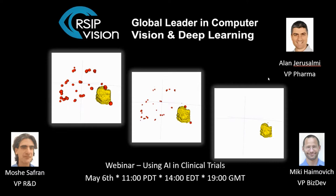So we're here to discuss using AI in clinical trials. I'll tell you a few words about RSIP Vision. Then we will discuss a specific context and a specific example using AI in clinical trials. Then we will delve into the benefits of AI in general in clinical trials. And then we will end with our Q&A session. I encourage you during the presentation to send your questions, and we'll be happy to answer each and every one of them at the end of the session.